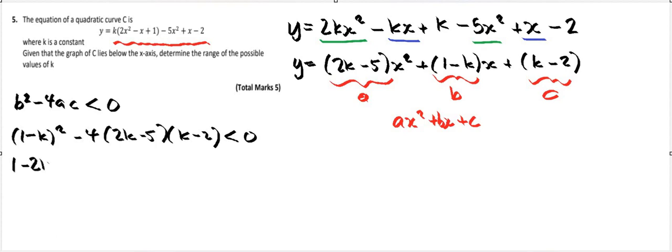1 minus 2k plus k squared, take away four lots of, and expand these two brackets. All of that is less than zero. So 2k times k, I've got 2k squared. 2k times minus 2, that's minus 4k. Take away another minus 5k, so that's minus 9k, and minus 5 times minus 2, which is plus 10.